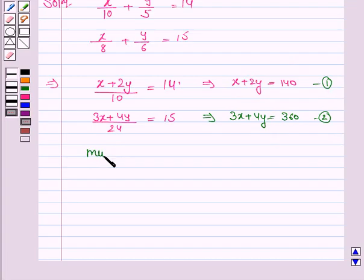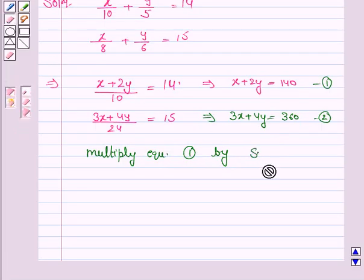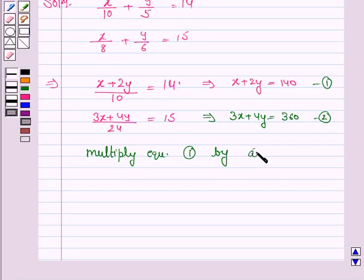So multiply equation 1 by 2 and subtract. Multiplying equation 1 by 2 we have 2x plus 4y is equal to 140 into 2 is 280. And the second equation is 3x plus 4y is equal to 360.